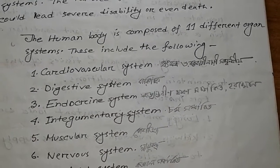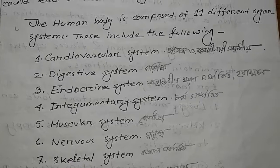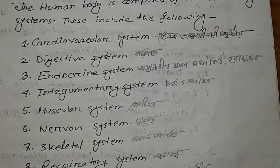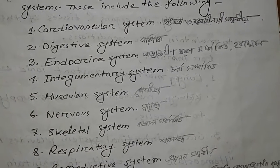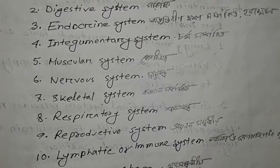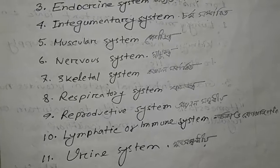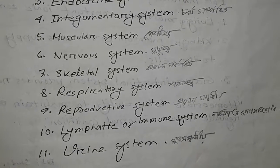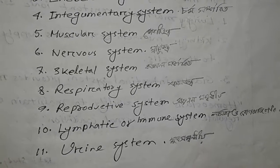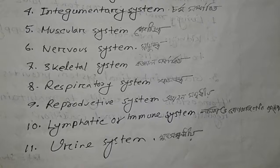The 11 organ systems include: the Cardiovascular system, Digestive system, Endocrine system, Integumentary system, Muscular system, Nervous system, Excretory system, Respiratory system, Reproductive system, Lymphatic or Immune system, and Urinary system.